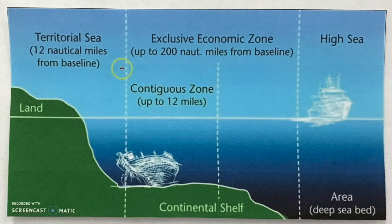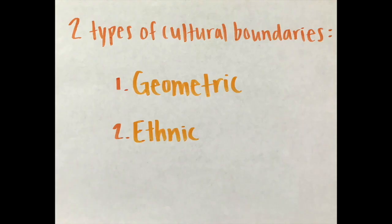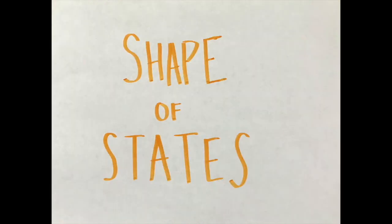Disputes can be taken to a tribunal for the Law of the Sea or to the International Court of Justice. There are two types of common cultural boundaries: geometric and ethnic. Geometric boundaries are simply straight lines drawn on a map. Other boundaries coincide with differences in ethnicity, especially language and religion. Boundaries have been placed where possible to separate speakers of different languages or followers of different religions. The shape of a state controls the length of its boundaries with other states, affecting the potential for communication and conflict with neighbors.